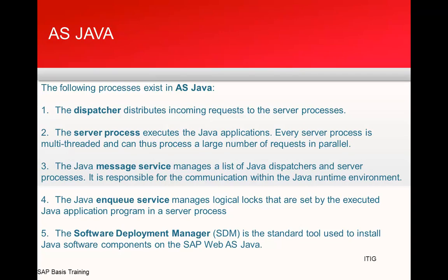In SAP Java, the dispatcher distributes incoming requests to the server processes. Server processes execute Java applications; each server process is multi-threaded and can process a large number of requests in parallel. The Java Message Service manages a list of Java dispatcher and server processes and is responsible for communication within the Java environment. The enqueue process manages database locks. SDM is a standard tool used to install Java components on the SAP Web AS Java.